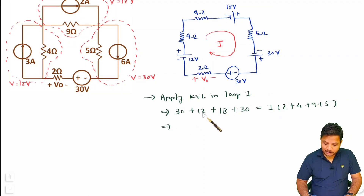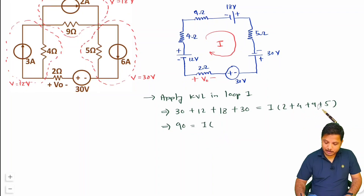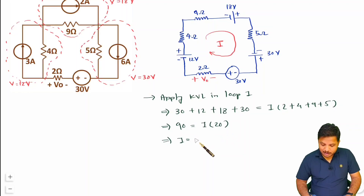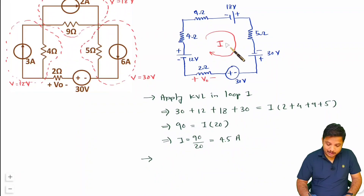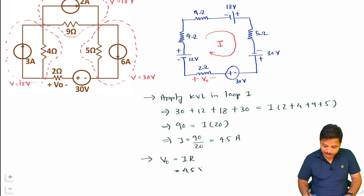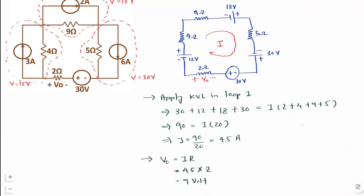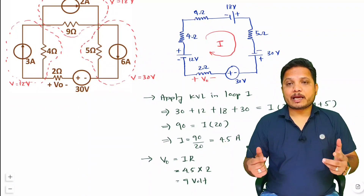So: 30 + 12 = 42, 42 + 18 = 60, 60 + 30 = 90 volts equals I × (2 + 4 + 9 + 5) = I × 20. Therefore I = 90/20 = 4.5 amperes. Now we can find V0. The current direction gives V0 = I × R = 4.5 × 2 = 9 volts. That is how we can find the equivalent voltage by applying source transformation.